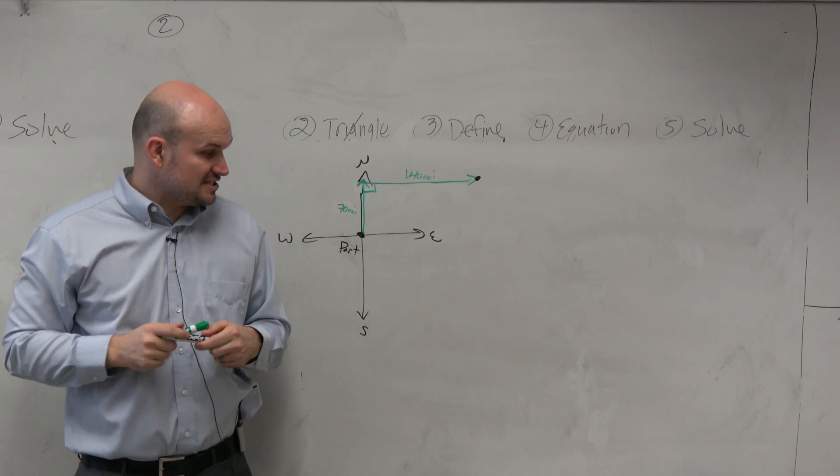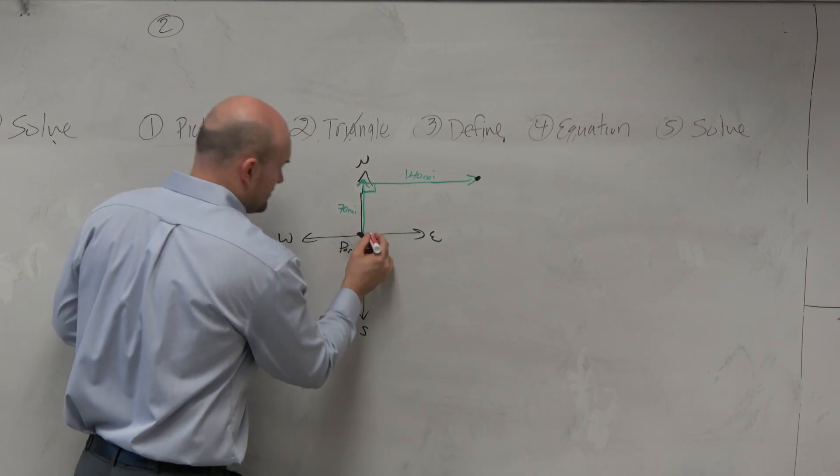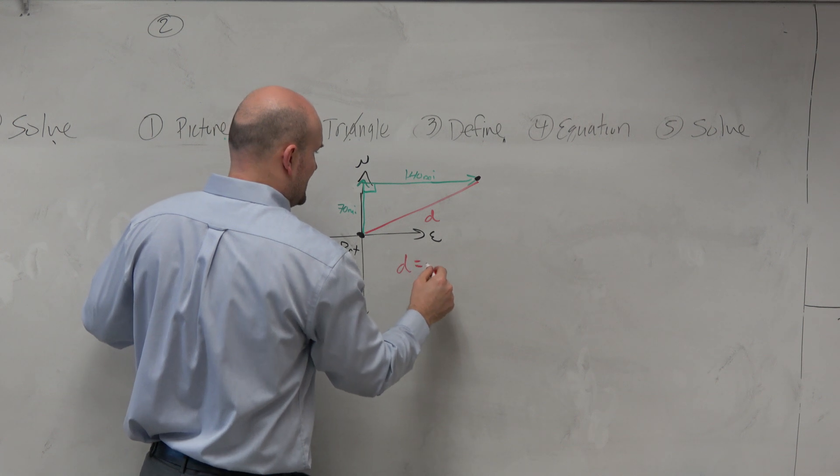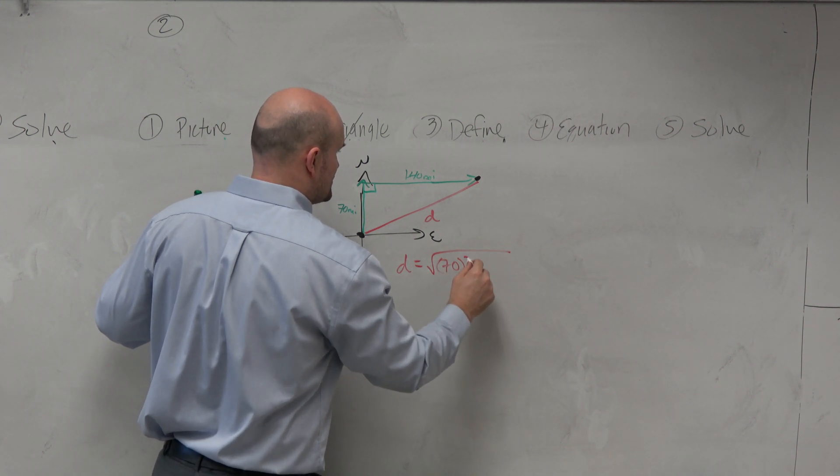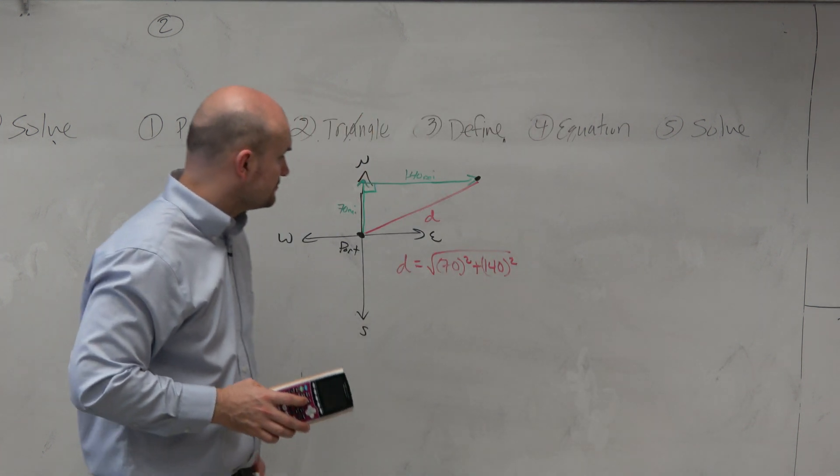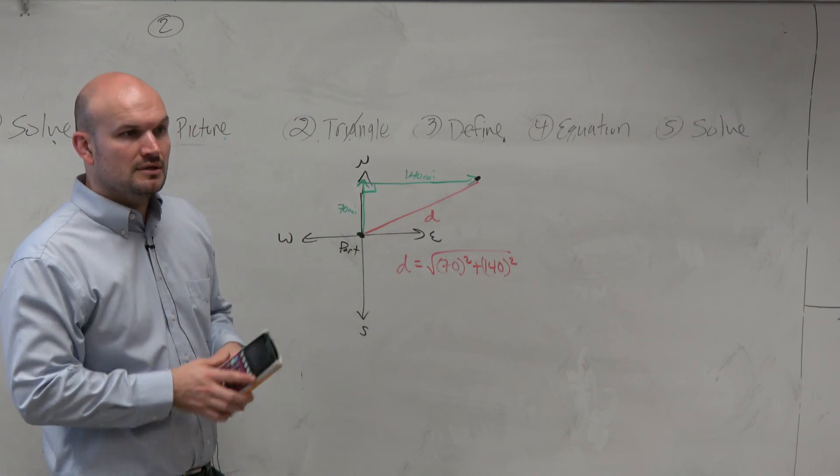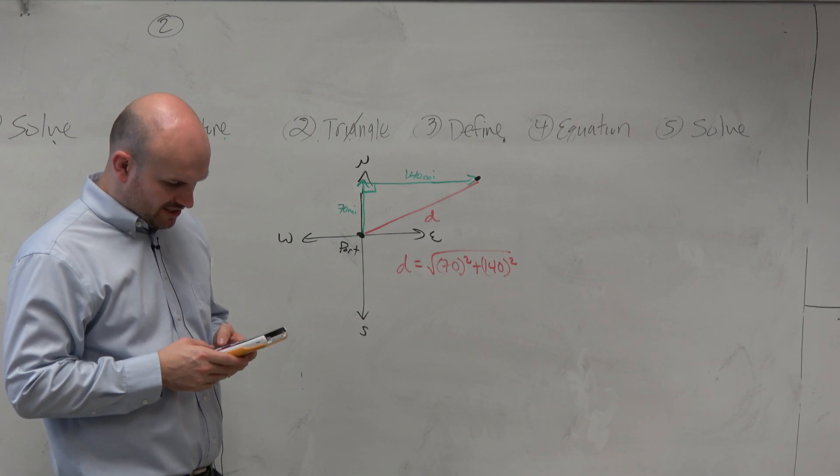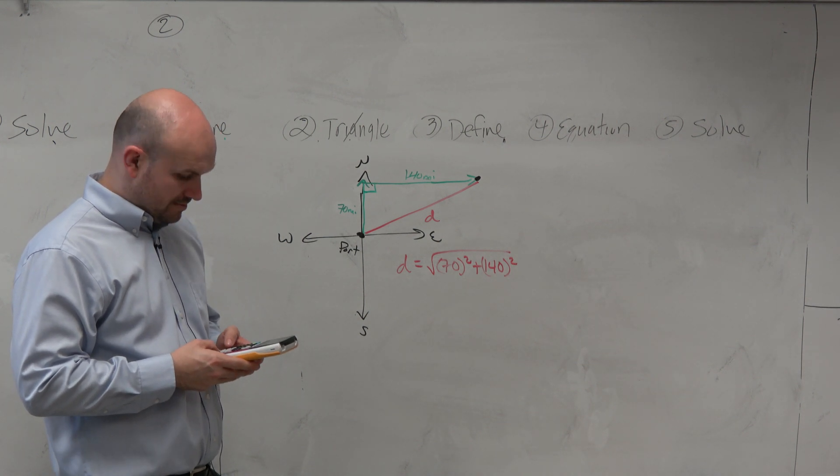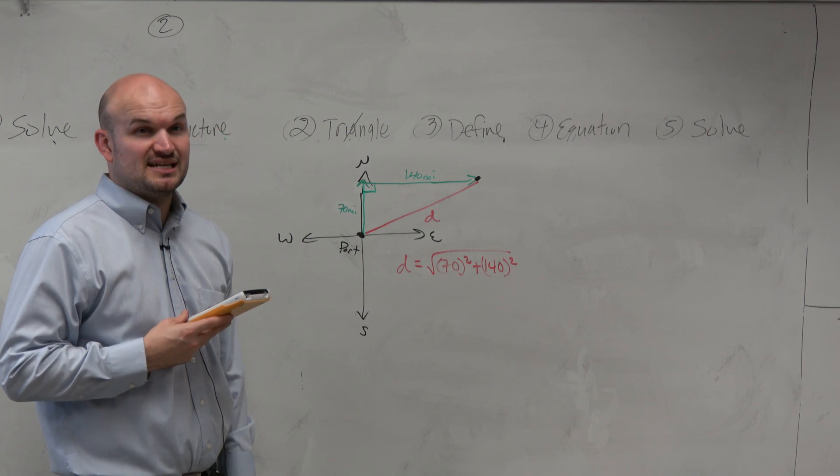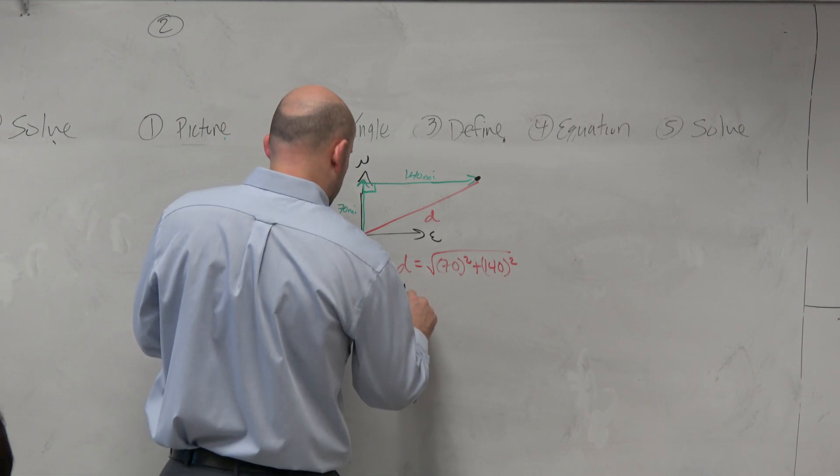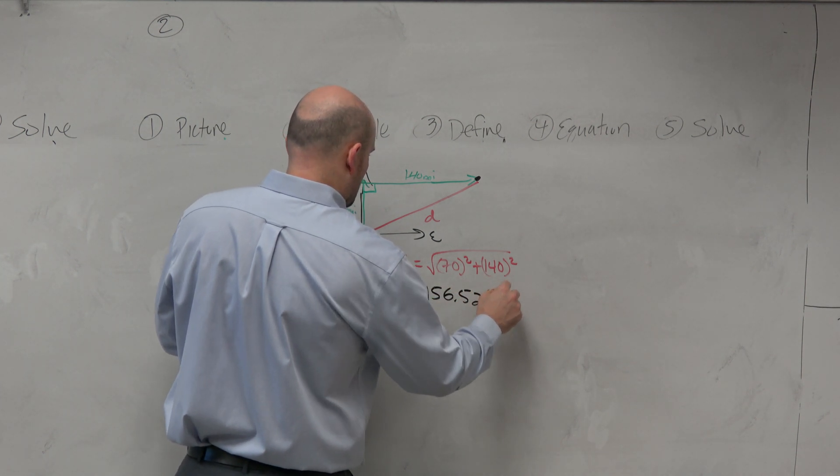So now, what we've got to do is it asks us to find the distance back to port. And guys, we recognize that the distance here is just the Pythagorean theorem. d equals the square root of 70 squared plus 140 squared. So let's go ahead and calculate that. So I'll just do the square root of 70 squared plus 140 squared. And I'm getting 156. Yes? No? OK. 156. And then if we round that to the nearest thousandth.